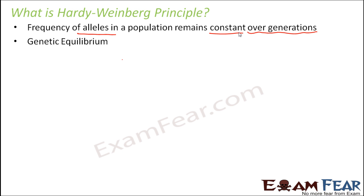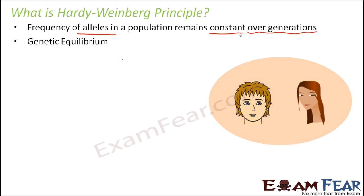This will become more clear when I take an example. So let me take an example of a very small population. However, this principle holds true for a bigger population, because when the population is big only then you can talk more precisely about the frequency of alleles or the frequency of genes. Just to understand this, we will take an example of a small population of two people.